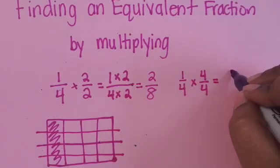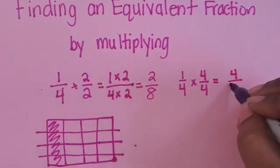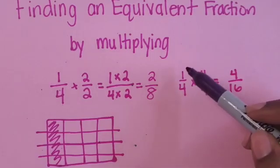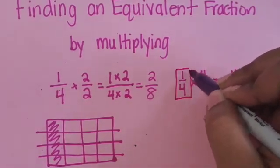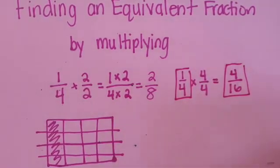1 times 4 is 4 and 4 times 4 is 16. So 1/4 is equivalent to 4/16. It's also equivalent to 2/8.